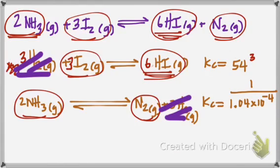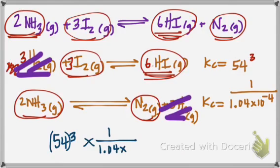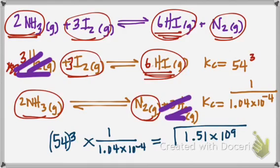So then with my values, I've got everything set up the way it needs to be. So I'm going to have my 54 cubed, and it's going to be multiplied. Once you get that answer, you're going to multiply it by the value of 1 over 1.004 times 10 to the negative 4. And when you do that, your answer should be 1.51. Let's put that where you can read it. 1.51 times 10 to the ninth. And that should give you your answer.